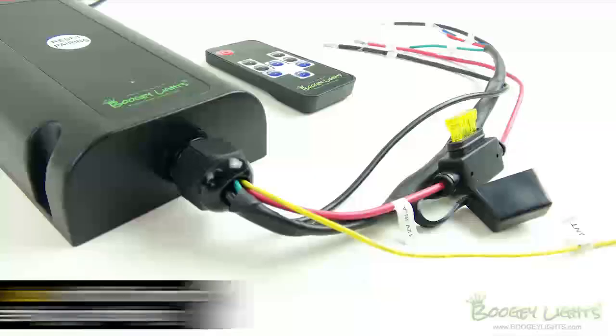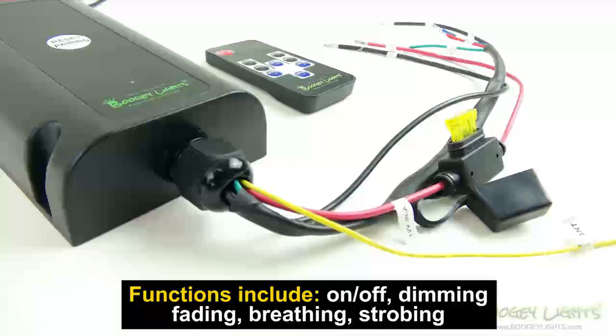The lighting effect options include on-off, dimming, fading, breathing, and strobing. There are seven levels of control over these effects.